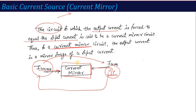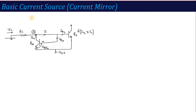We will study this circuit in two ways — one is BJT-based and one is MOS-based, that is MOSFET-based. But first, I will talk about the BJT. So here I will discuss the circuit called the basic current source or BJT current mirror, that is, current mirror using BJT — Bipolar Junction Transistor.